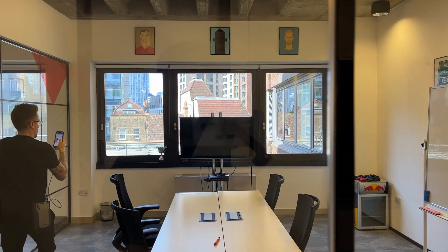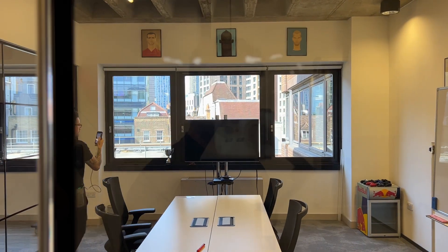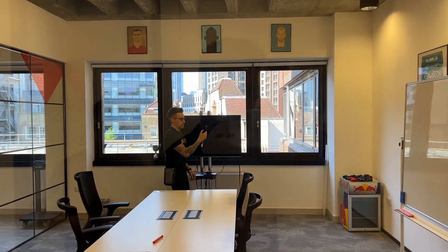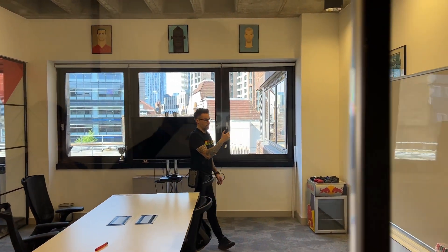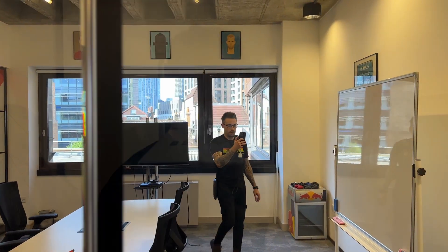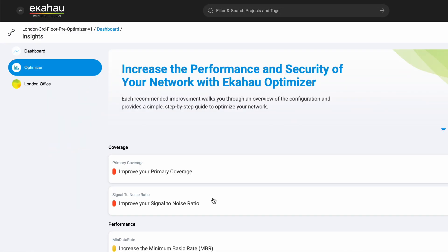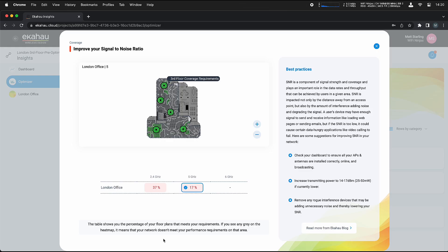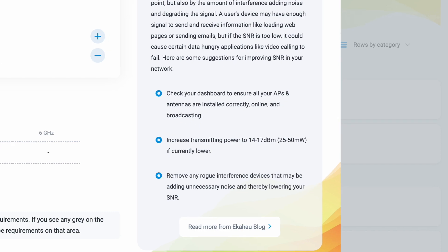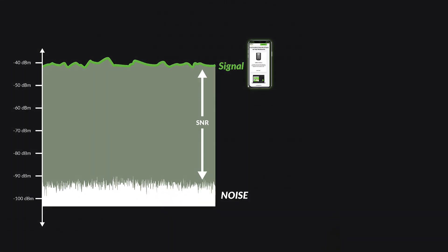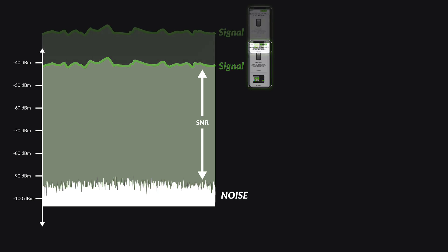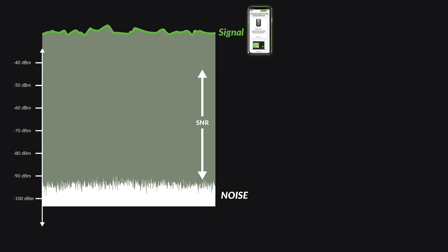ECHOHO Optimizer turns the wi-fi data you've just collected in your site walk into actionable insight, laying everything out into easy step-by-step guides for optimizing your network. Improving SNR in your environment involves increasing your signal strength, reducing your noise, or both.